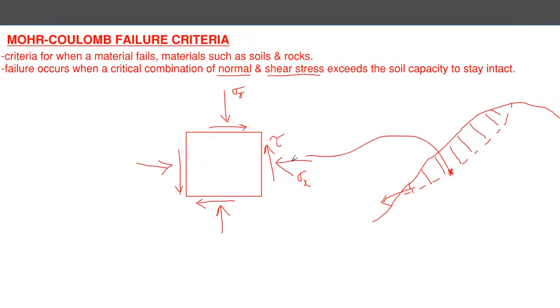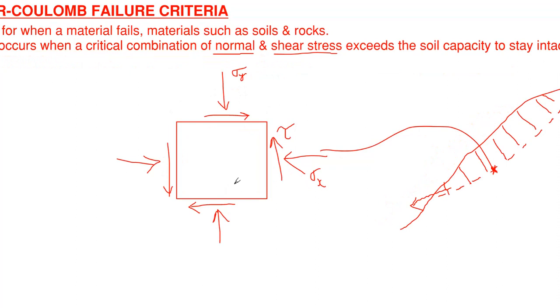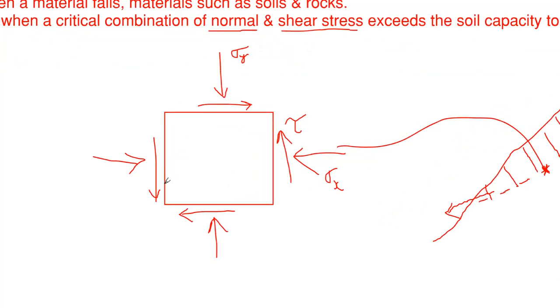Now, given certain stresses that occur within this element, a failure can occur along a plane - it could be any plane, and you can cut infinite amount of planes through this. But let's say, for discussion, a failure plane looks like this.